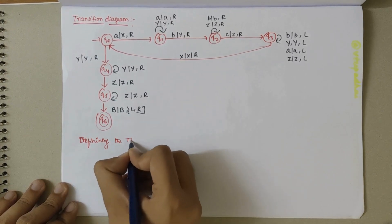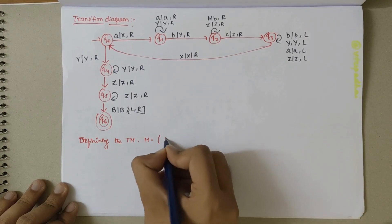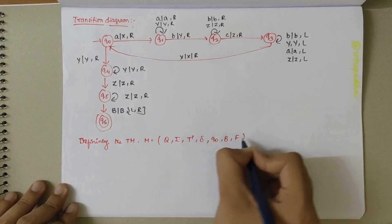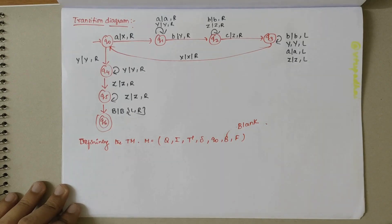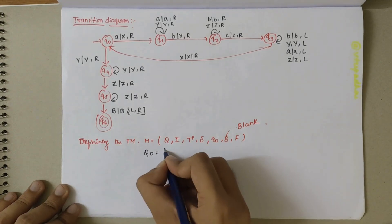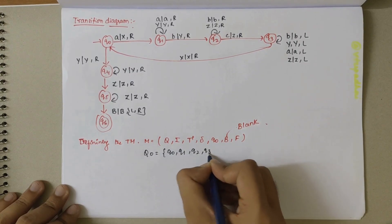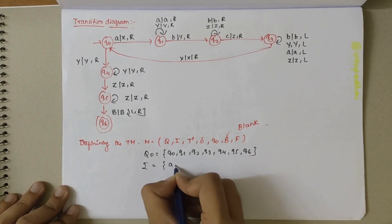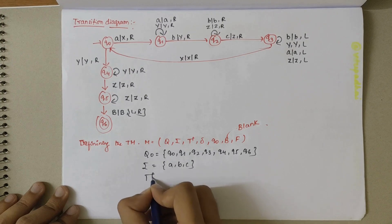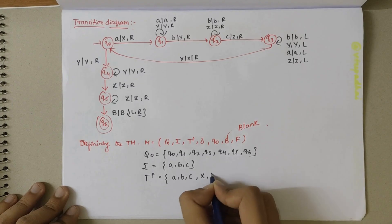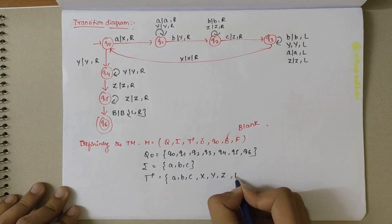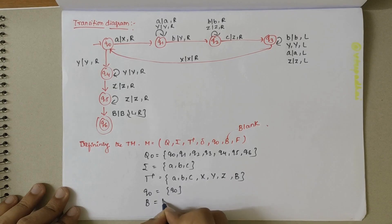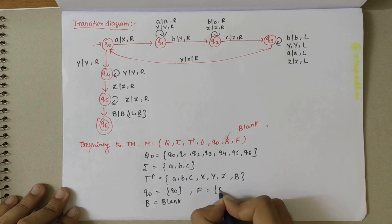Defining the Turing machine formally, we use the formula M = (Q, σ, τ, ρ, Q0, B, F), where B is blank. The set of states Q = {Q0, Q1, Q2, Q3, Q4, Q5, Q6}. The input alphabet σ = {A, B, C}. The tape alphabet τ = {A, B, C, X, Y, Z, B}. Q0 is the start state, B is the blank symbol, and F = {Q6} is the set of final states.